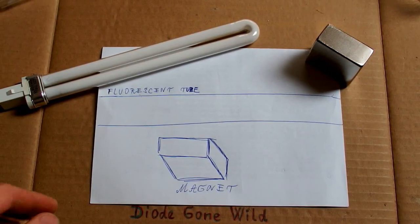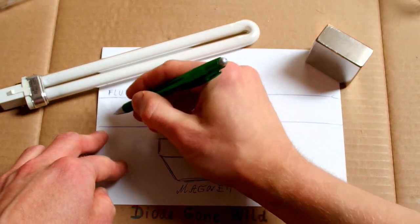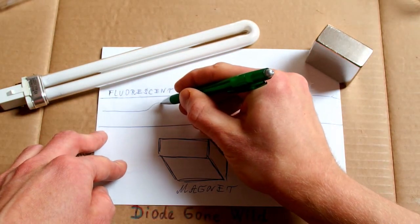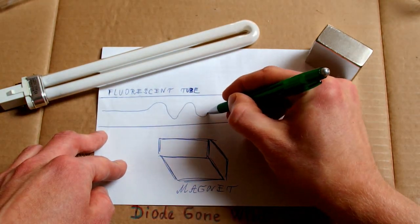So the conclusion is that the fluorescent tube gets brighter in magnetic field because the arc is being distorted and gets longer. And also it gets closer to the phosphor.